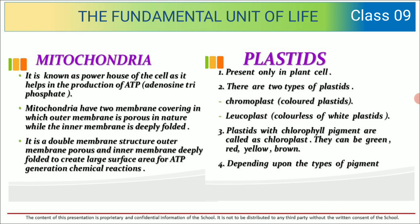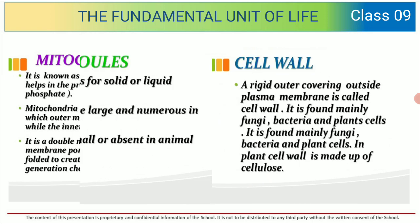Plastids are present only in plant cells. They are of two types: chromoplasts, which are colored, and leukoplasts, which are colorless or white. Plastids with chlorophyll pigments are called chloroplasts. They can be green, red, yellow, or brown depending upon the types of pigments present.